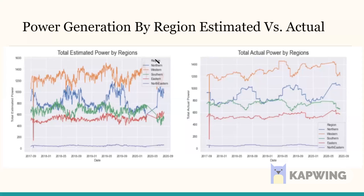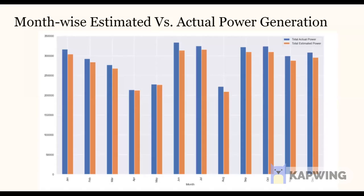These graphs are generated using the Seaborn library. The left side describes the total estimated power by different regions, and the right side shows the total actual power by different regions of the country. The month-wise estimated versus actual power generation is also shown.